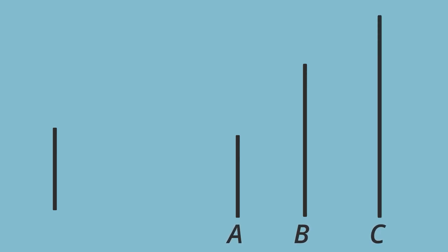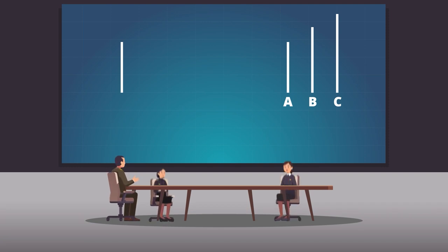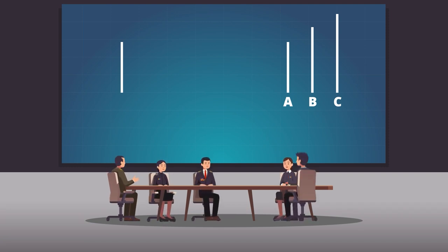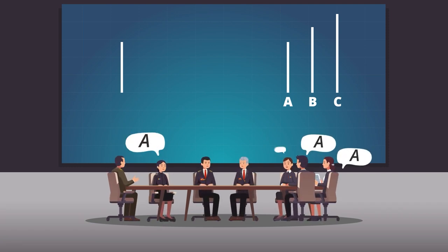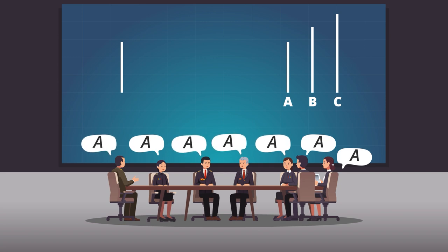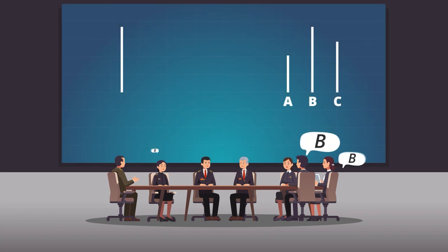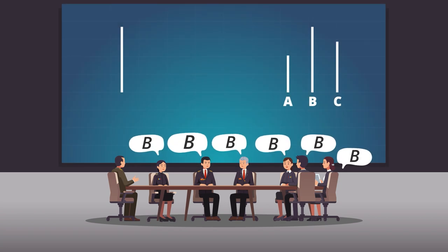Bu soruyu herkesin sırayla yüksek sesle cevaplandırması istenmiş olup gerçek denek ise sıranın sonuna yerleştirilmiştir. Toplamda 18 etaptan oluşan deneyde yardımcılar ilk 6 etapta doğru cevap vermiş, 12 etapta ise bilerek yanlış cevap vermiştir.